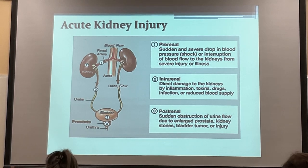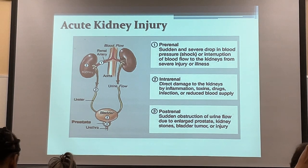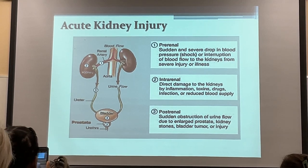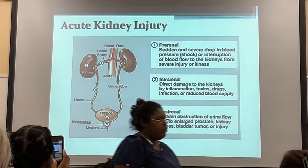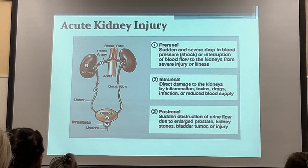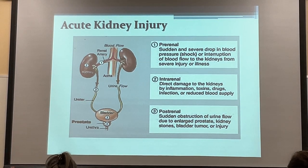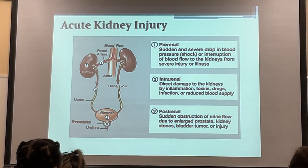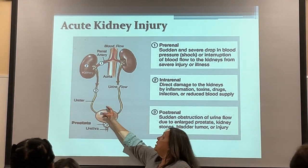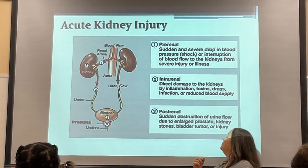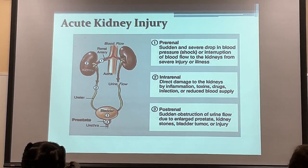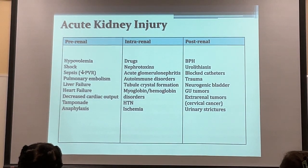This slide shows a visual of pre-renal, intra-renal, and post-renal. Pre-renal is a sudden and severe drop in blood pressure through shock or interruption of blood flow from severe injury or illness. Intra-renal is direct damage to the kidneys by inflammation, toxins, drugs, or infection. Post-renal is an obstruction of urine flow due to an enlarged prostate, bladder problems, or a blocked ureter.